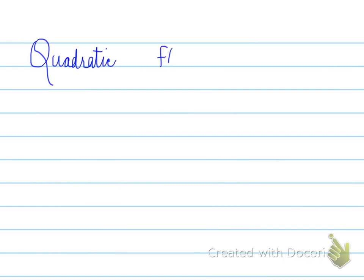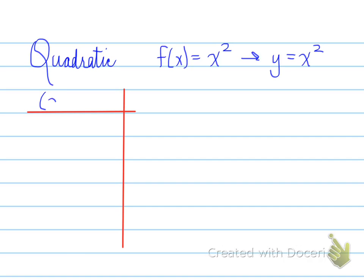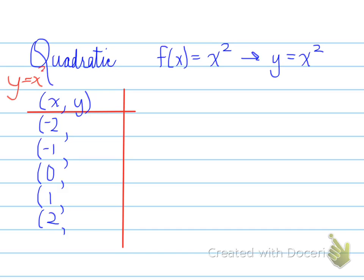Moving forwards, there are quadratics. A quadratic is f(x) equals x squared, or y equals x squared. We have a basic table for quadratics — the same x values we've been using, and this time the y values are all the x values squared. So 4, 1, 0, 1, and 4.